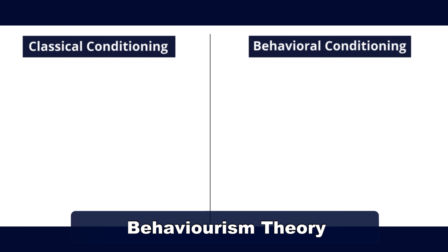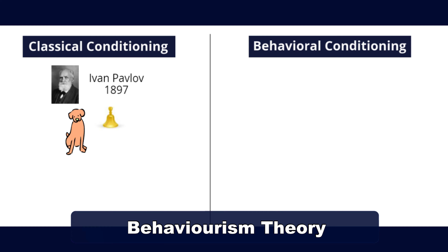Classical conditioning was discovered by the Russian physiologist Ivan Pavlov, and you may be familiar with his famous experiment with dogs. He showed that when a bell was sounded each time the dog was fed, the dog then learned to associate the sound with feeding time. Once conditioned, the dog would salivate simply in response to a bell tone, regardless if food was present or not. This is famously referred to as the Pavlov effect.